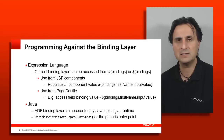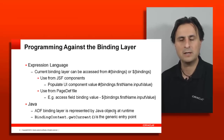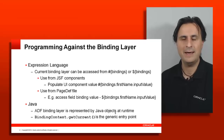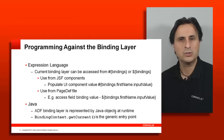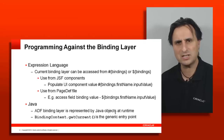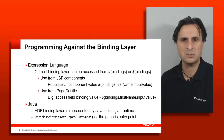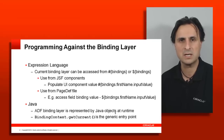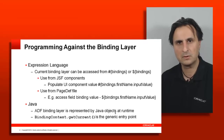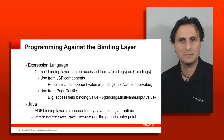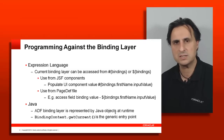If on the binding container you call get() with the name of an attribute binding or a tree binding, you get an object back which you will have to cast to either AttributeBinding or, for a tree binding, to JUCtrlHierBinding. One way around this — and perhaps easier for beginners — is to cast the binding reference to DCBindingContainer, which gives you typed interfaces. One method is findIterator(), which returns an object of type DCIteratorBinding, so it casts this already for you.